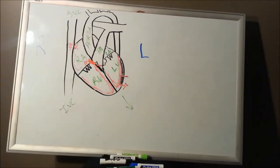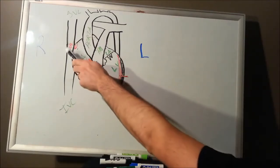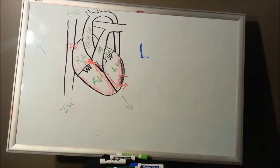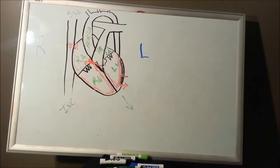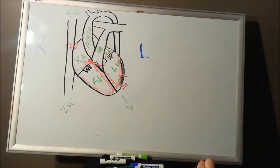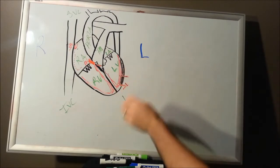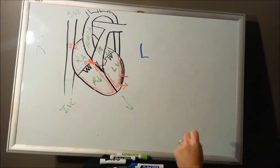We just talked about the automaticity cells — the sinoatrial node and the atrioventricular node, the AV node. Next, let's look at the rest of the heart. Besides those two small nodes made up of a few cells, we're going to look at the rest of the muscle tissue of the heart.